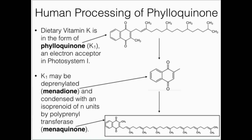Vitamin K, just like in the case of vitamin A, is a general name for a class of compounds that all are functionally related. The main vitamin K molecules we're going to talk about are phyloquinone and menaquinone, the structures of which are shown here. The one at the top is referred to as phyloquinone and the one at the bottom is known as menaquinone.